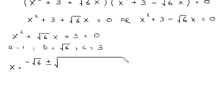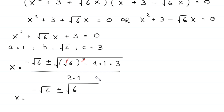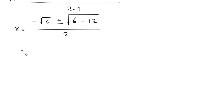According to the quadratic formula, x equals negative root 6 plus or minus the square root of root 6 whole squared minus 4 times 1 times 3, divided by 2. The square cancels with the square root, leaving 6 minus 12, which is negative 6. So x equals negative root 6 plus or minus square root of negative 6, divided by 2.